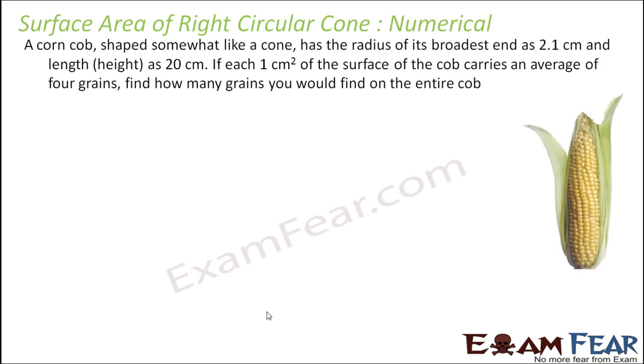Let's take a few more questions to understand the concept. A corn cob shaped somewhat like a cone has a radius of its broadest end as 2.1 cm. So this is almost like a cone and this radius is 2.1 cm. And the length, when you are saying length, they have mentioned it is height. It is not slant height.